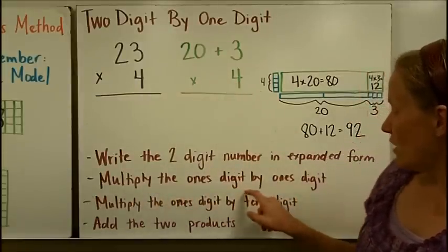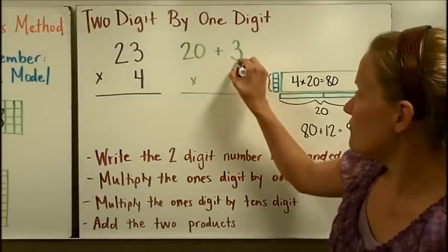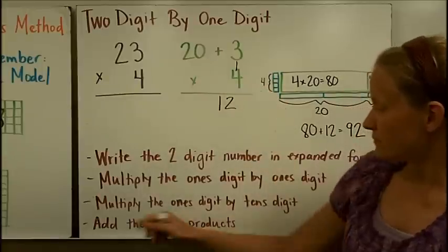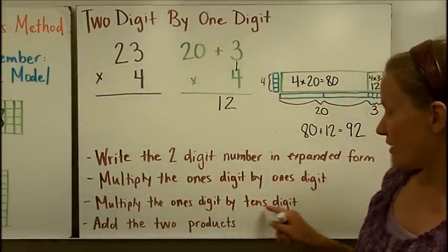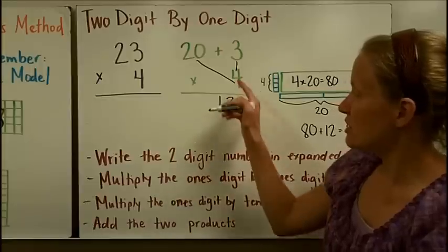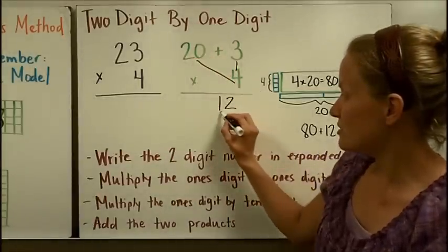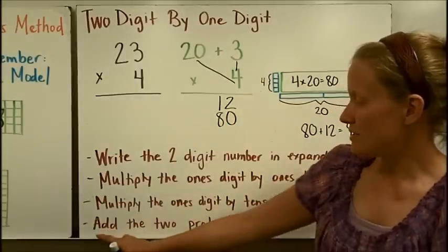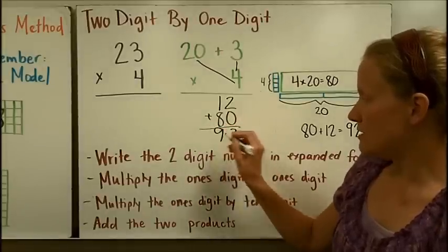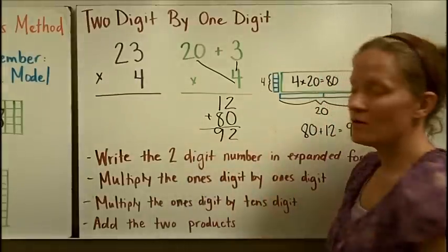Now I'm going to multiply the ones digit by the ones digit — that is four times three. I write my product down under the line. Then multiply the ones digit by the tens digit: four times twenty. I can do four times two is eight, then add a zero, which is eighty. Now add the two products and we get ninety-two. That is the answer to this problem.